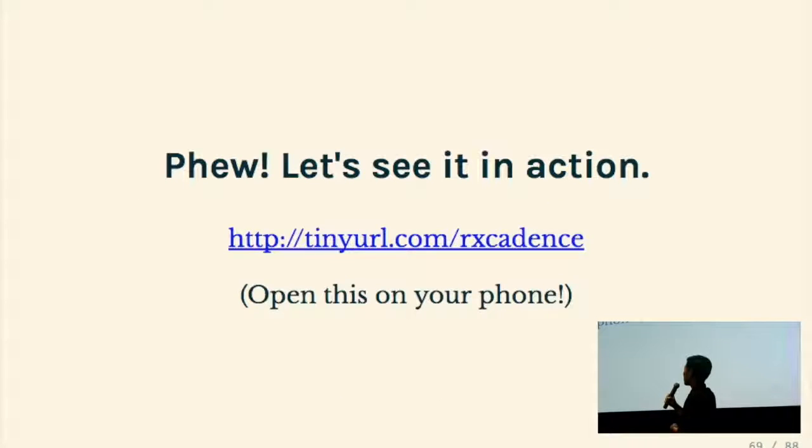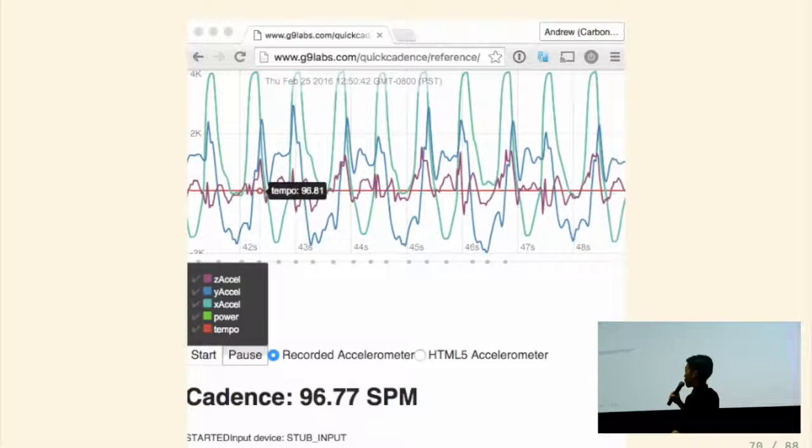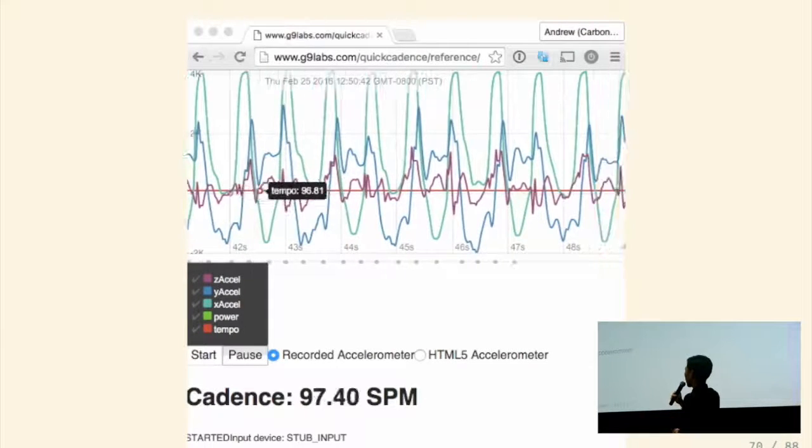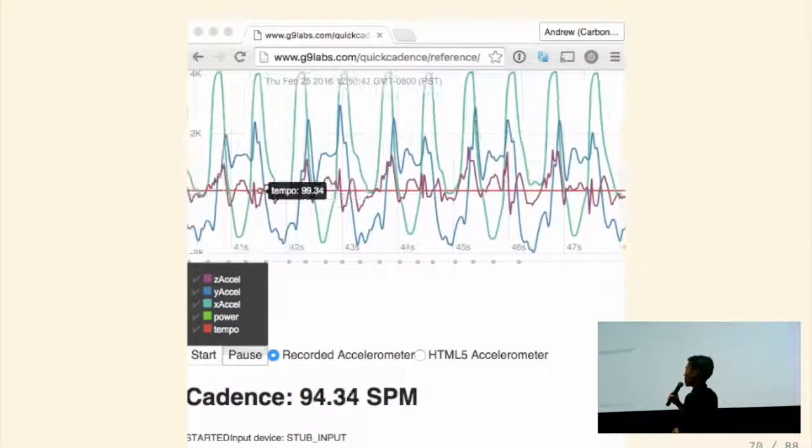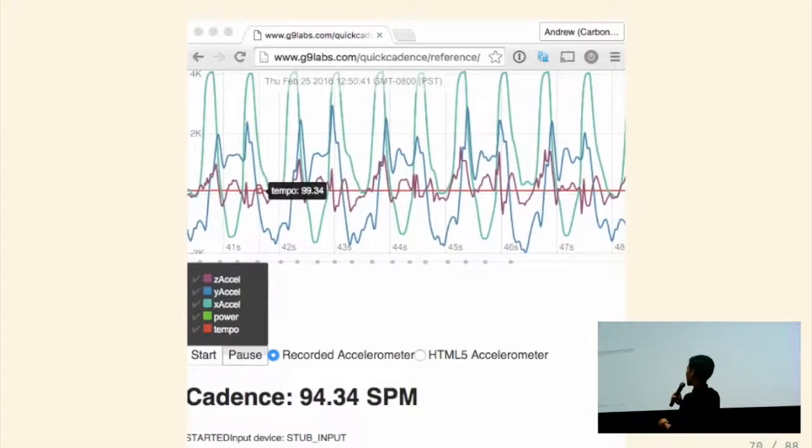All right, so we're going to see it in action. You can open this on your phone if you want. But basically, if you load it up, just shake your phone and you just start getting some sort of reading that comes out. It's going to be a page that kind of looks like this. And basically, you can choose either a recorded stream, which is me running sometime last year, or you can click this and that'll be your live, that'll be your phone's data. And you hit start and this guy should start working.